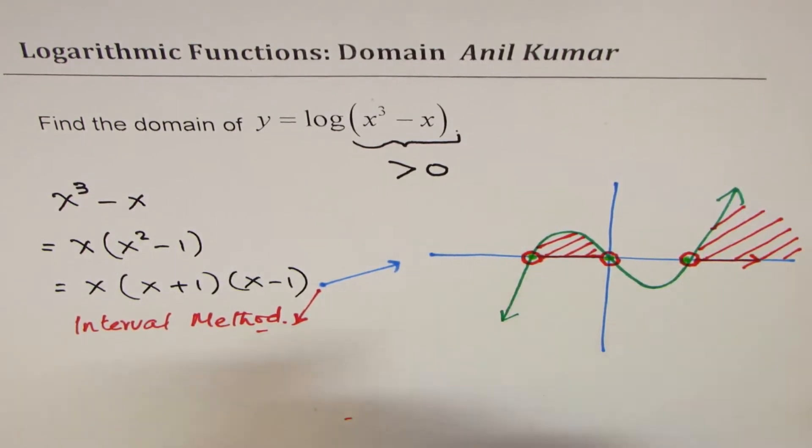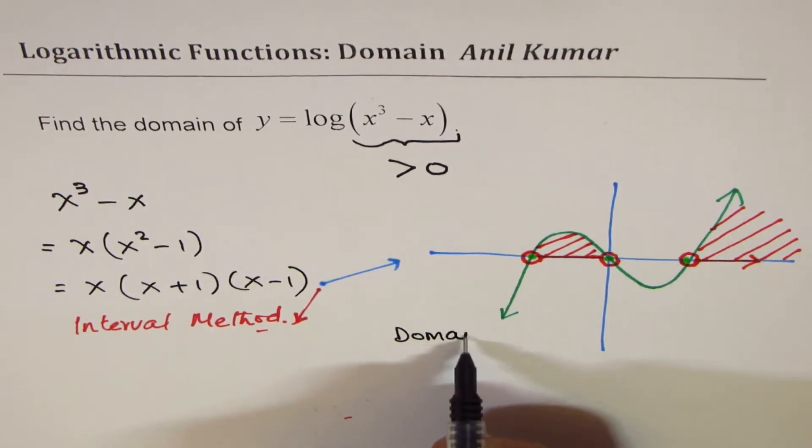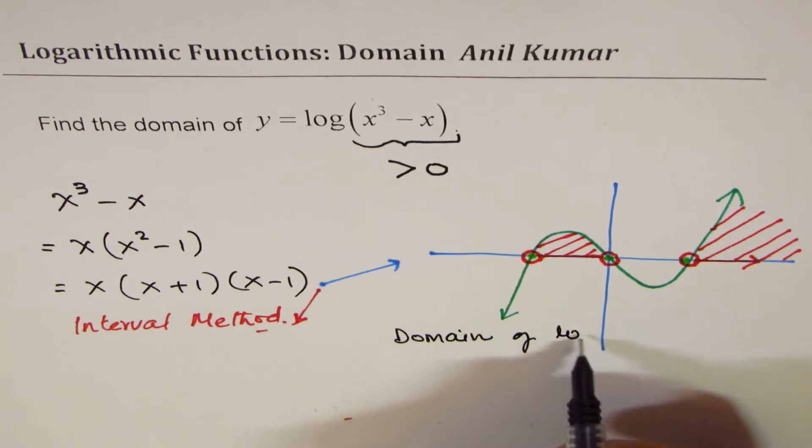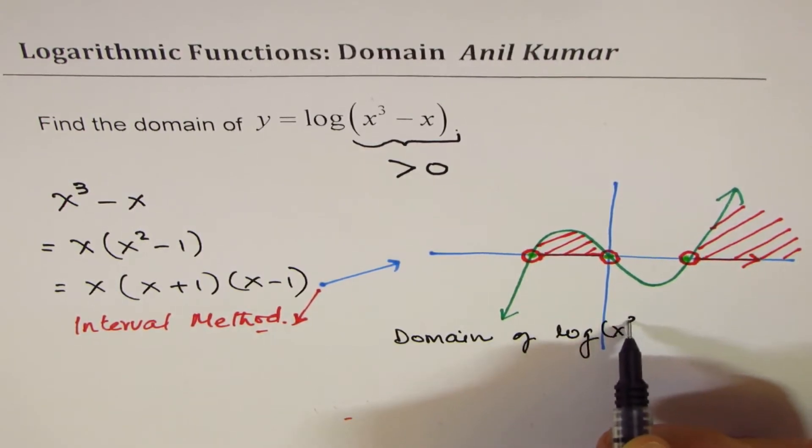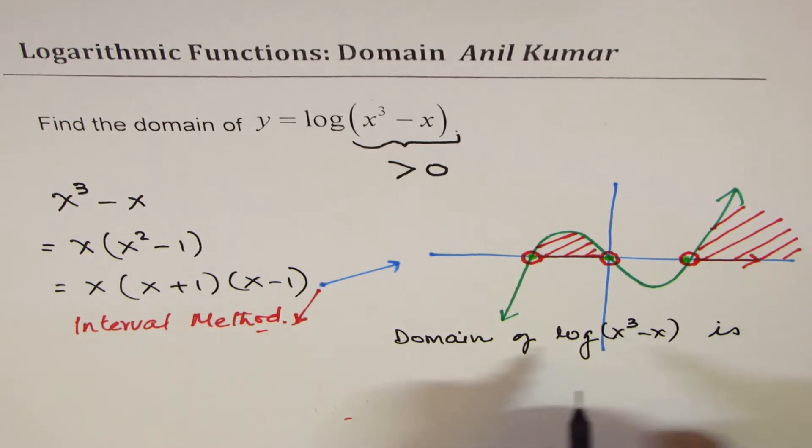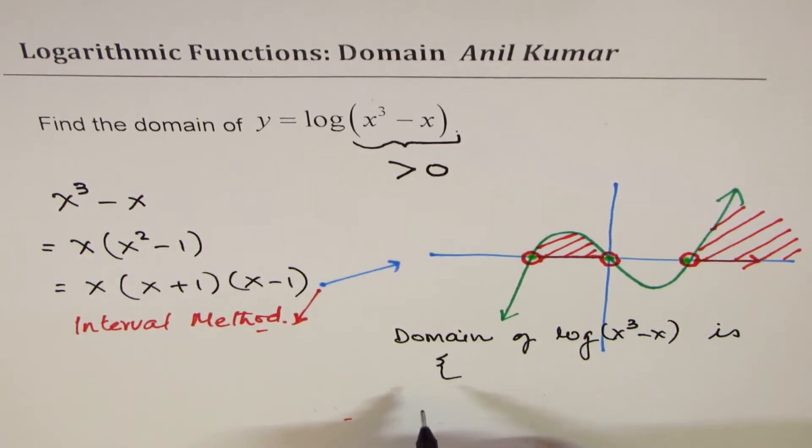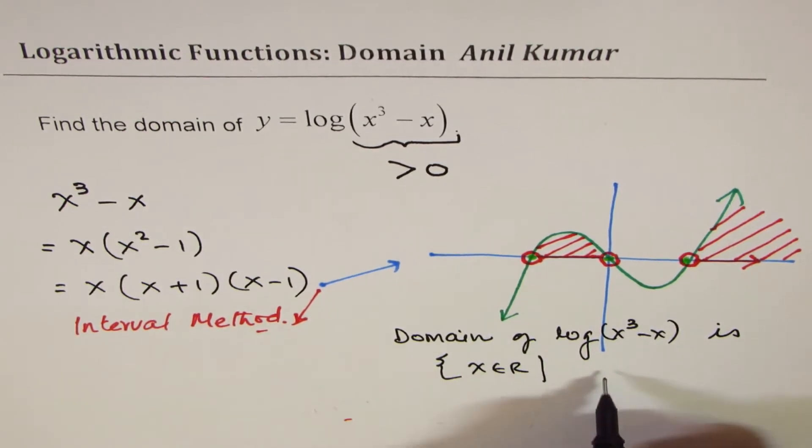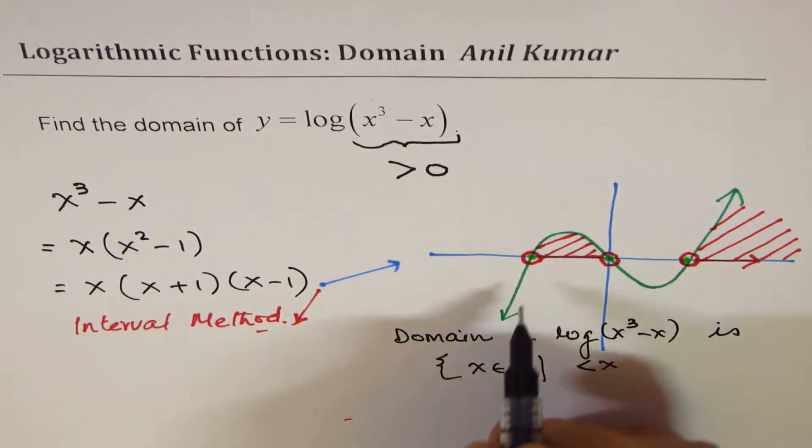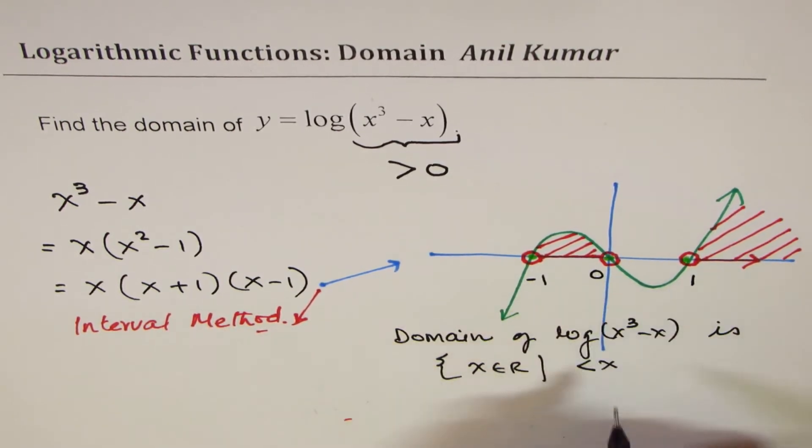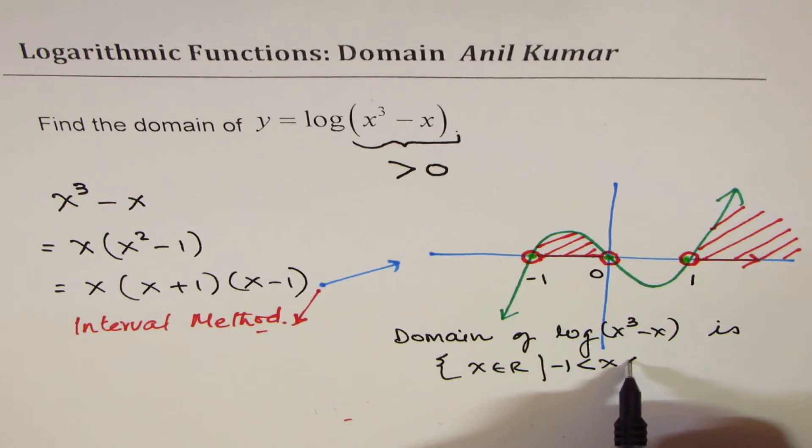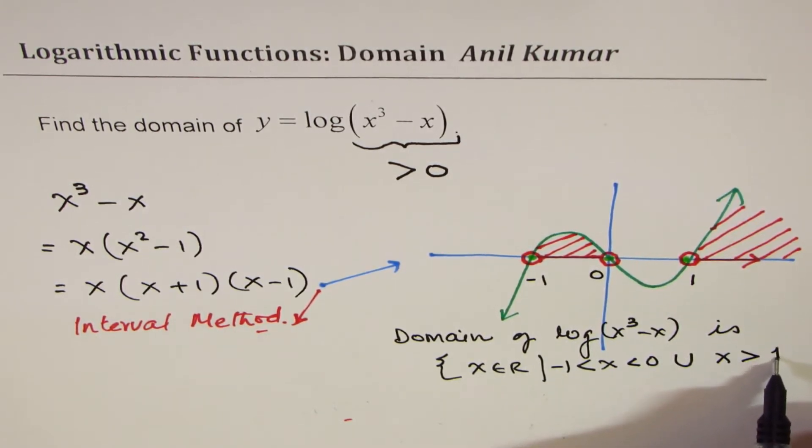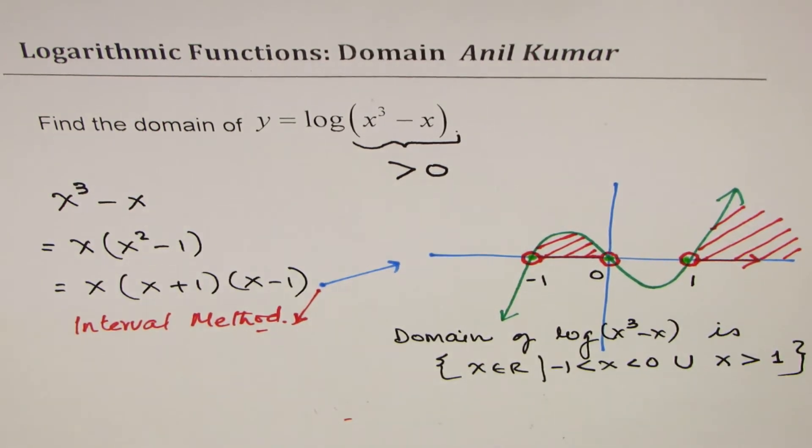So I can now write down the answer that the domain of log(x³ - x) is, you can write in this fashion, that x belongs to real numbers where x is greater than -1, less than 0, or x is greater than 1. So that is how you can easily show the answer.